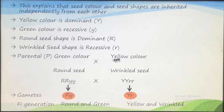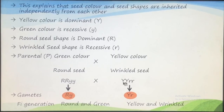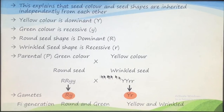The second parent had yellow color seeds and wrinkled shape of seeds. Yellow color is dominant, expressed as capital Y capital Y, and wrinkled seeds are recessive, expressed as small r small r. Mendel then cross-pollinated these two plants.